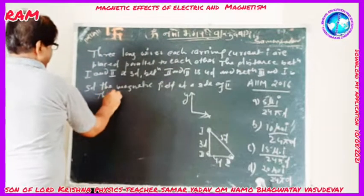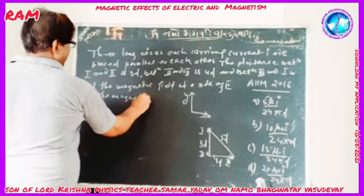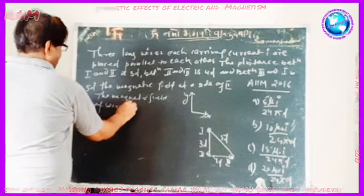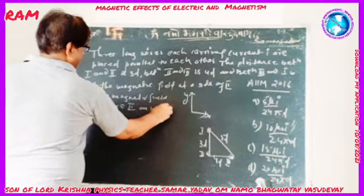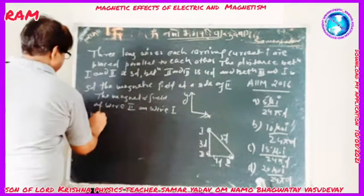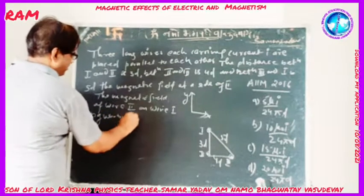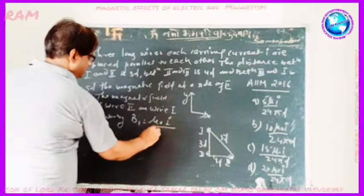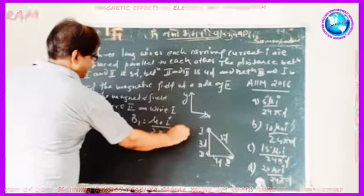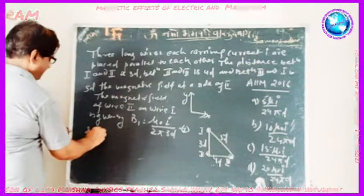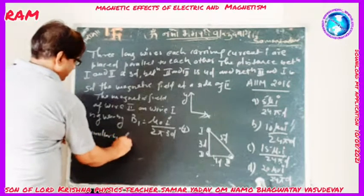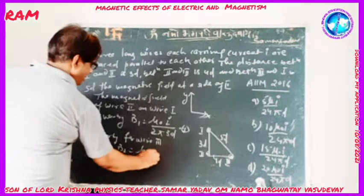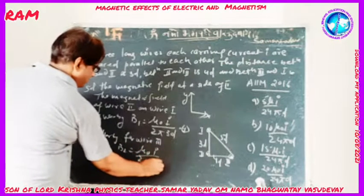The magnetic field at the site of the second wire due to wire 1 is given by B1 = μ₀I / (2π × 3D). Similarly, the magnetic field due to wire 3 is B2 = μ₀I / (2π × 4D).